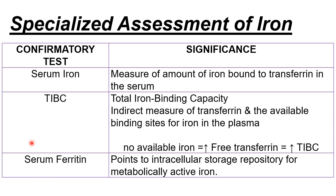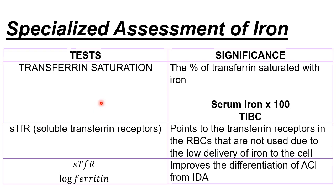Transferrin saturation is a calculated test: you take serum iron divided by TIBC, multiply by 100, and the result is expressed as a percentage. Next, STFR — soluble transferrin receptors. For iron to enter erythroid precursors to eventually form hemoglobin, it requires transferrin receptors. Transferrin binds to these receptors and delivers iron molecules inside the cell.